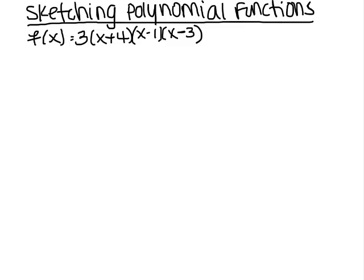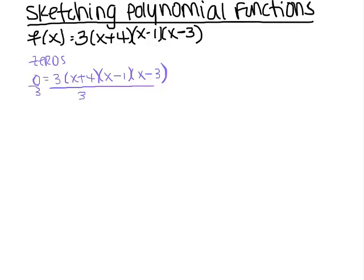So we can probably figure out some information given what we have here. Something I can definitely figure out are the zeros. If I want to find the zeros of this polynomial, I'm going to set the whole function equal to 0. I'll divide everything by 3 to get rid of that coefficient, so I get 0 equals x plus 4 times x minus 1 times x minus 3. Since I have these three factors equal to 0, I'm going to get three zeros — one for every factor.